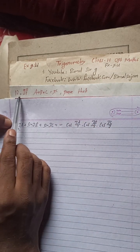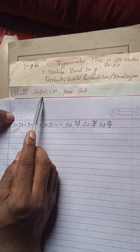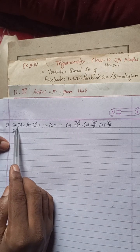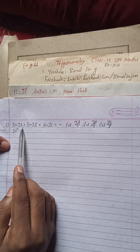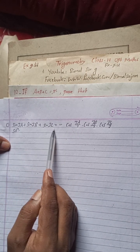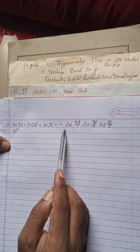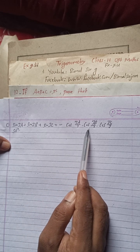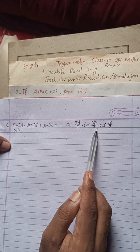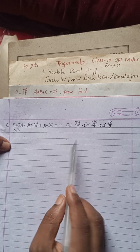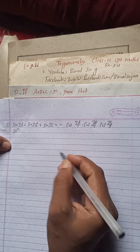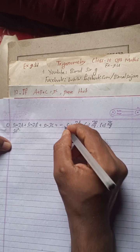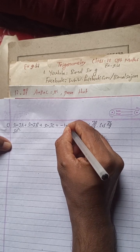Let's begin the solution. If a + b + c = π radians, prove that sin3a + sin3b + sin3c = -4 cos(3a/2) · cos(3b/2) · cos(3c/2). Actually, there is a mistake in the question — there must be 4. This is a print mistake in the book, that is okay students.